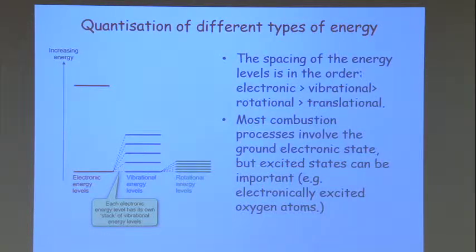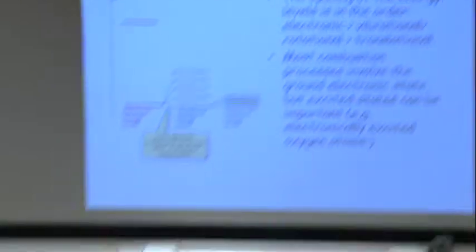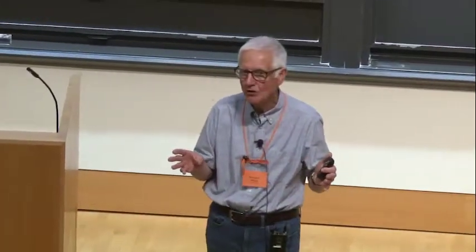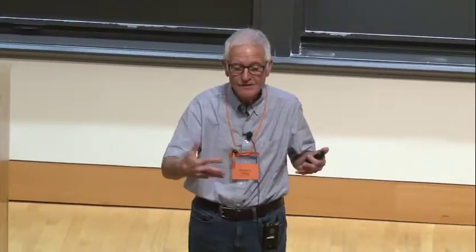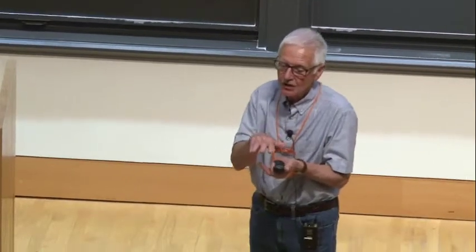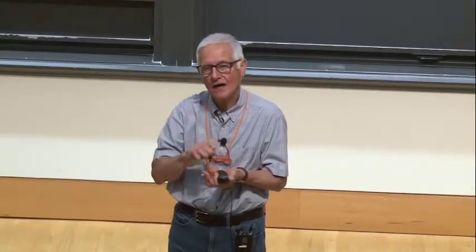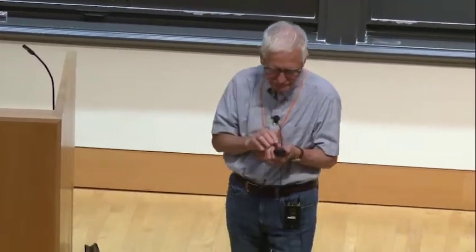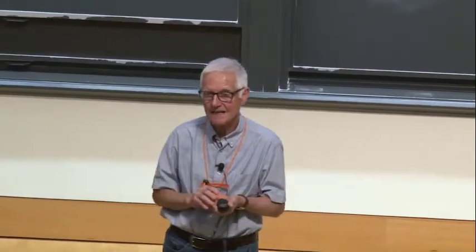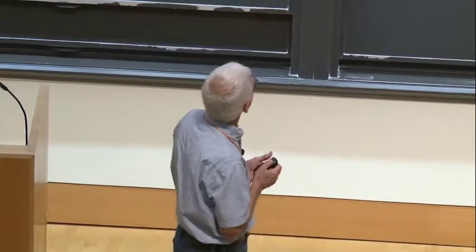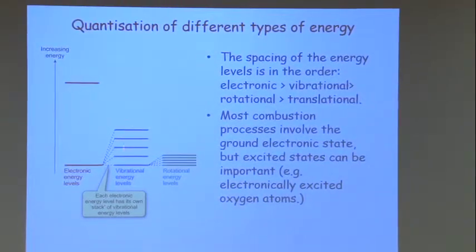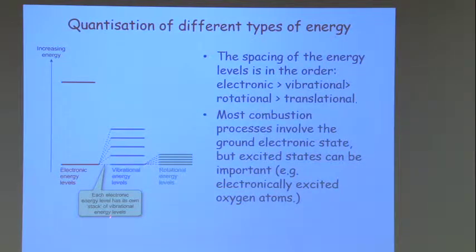Let's think about the quantization of different sorts of energy. Electronic energy levels refer to the motion of electrons in the molecule. In a diatomic molecule, electrons move around and we can have different energy levels associated with them. We can determine these energy level spacings experimentally or calculate them using quantum mechanics. Those energy levels are usually very widely spaced. Vibrational energy levels are the next most widely spaced, and there's a stack of vibrational energy levels associated with each electronic energy level. Vibrational energy levels only occur in molecules, not atoms.